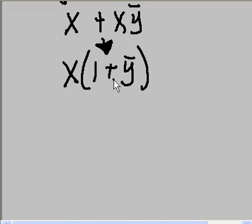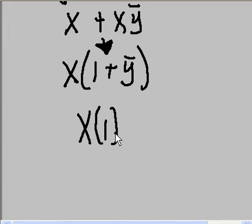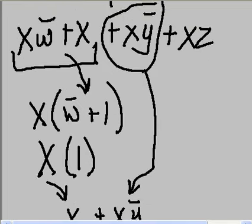Alright. If you OR anything with a 1, what are you going to get? A 1 all the time. So this reduces to a 1 again. And now you have x ANDed with a 1. If you AND anything to a 1, what are you going to get? You're going to get whatever that anything is. In this case, x.